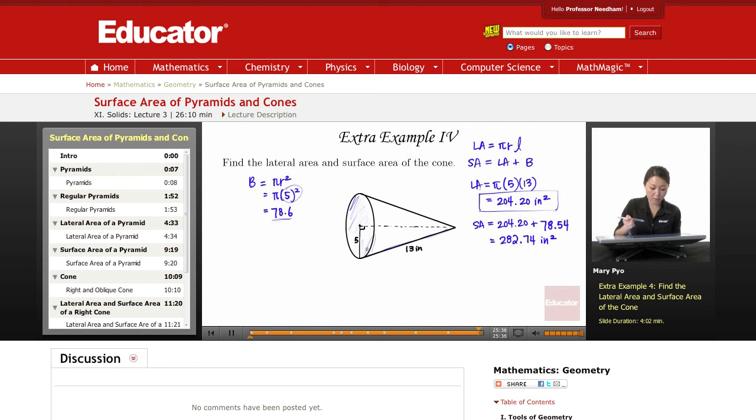I only have one base, so whatever my lateral area is, I can just add this number to that. But if I have two bases, then I have to multiply that base times 2, and then add it, right?